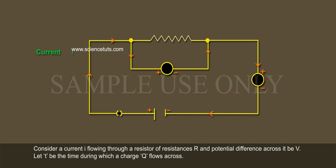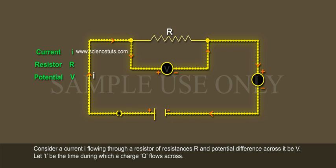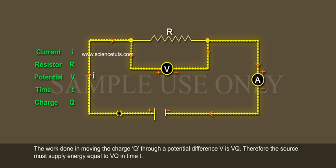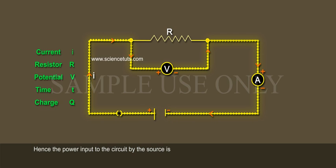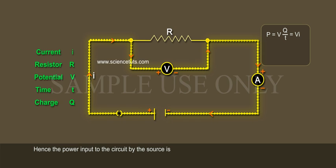Consider a current I flowing through a resistor of resistance R with potential difference V across it. Let T be the time during which a charge Q flows across. The work done in moving the charge Q through a potential difference V is VQ. Therefore, the source must supply energy equal to VQ in time T. Hence, the power input to the circuit by the source is P = VQ/T = VI, since Q/T = I.